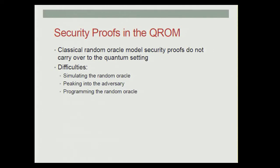Another difficulty is a common proof technique in the classical random oracle model where we use the oracle queries to peek into the adversary. When an adversary queries the random oracle on X, we know that the adversary is interested in X. The obvious quantum analog would be to sample the quantum query and see which input the adversary was interested in, but this destroys the superposition and the adversary would be able to notice.